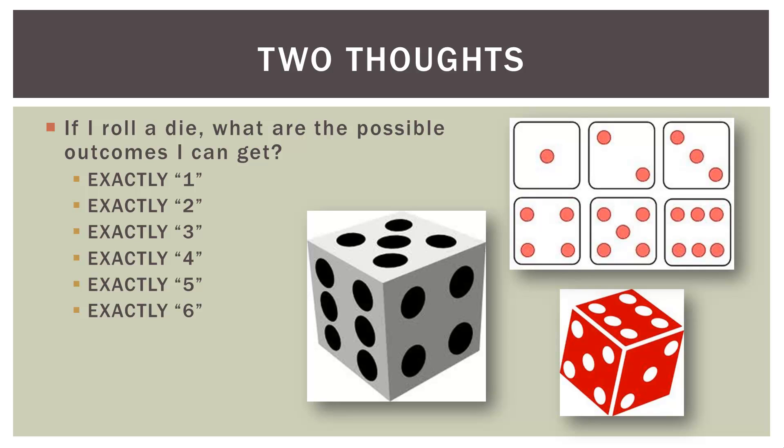Well, I could roll exactly a one, exactly a two, exactly a three, a four, a five, or a six. So there are only six outcomes in this experiment, one through six.